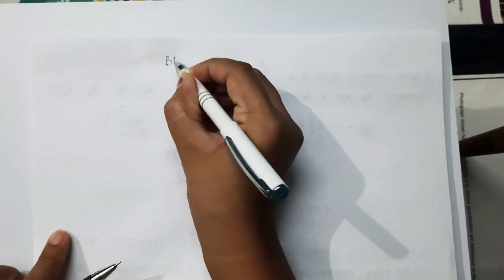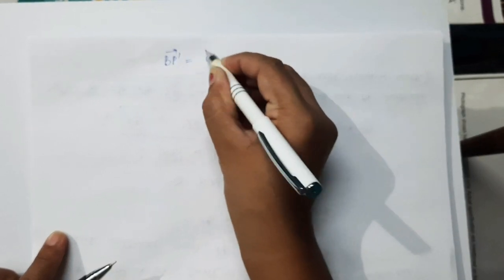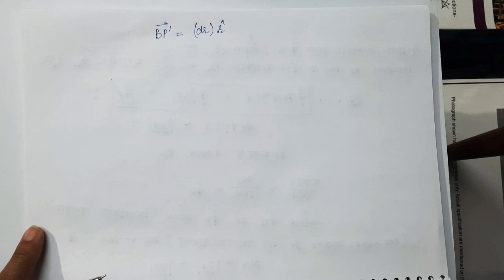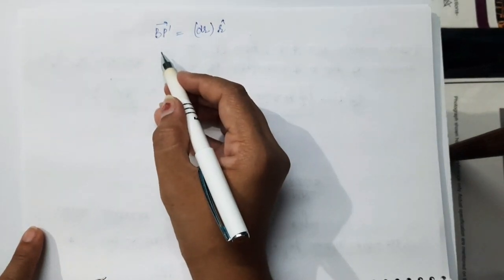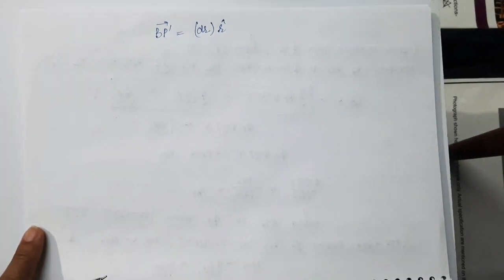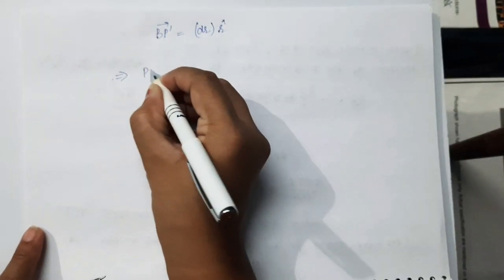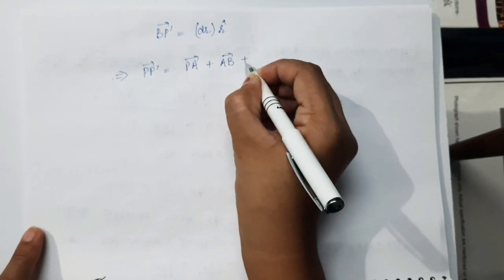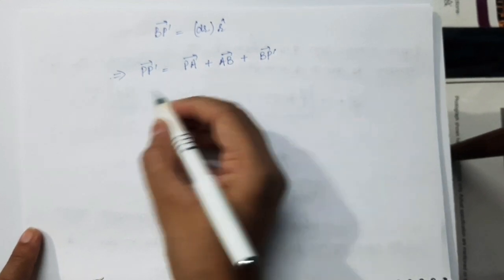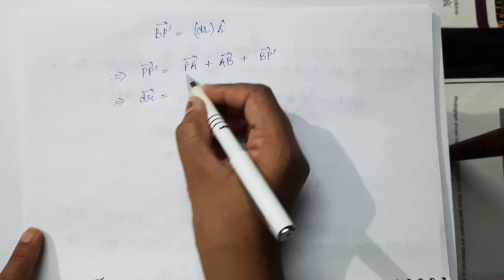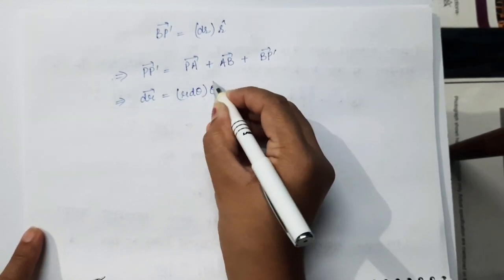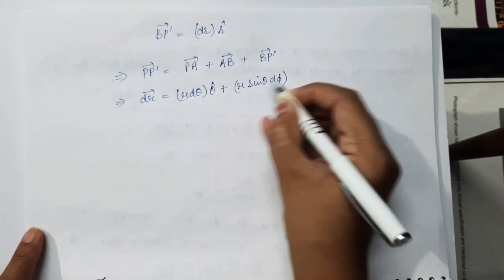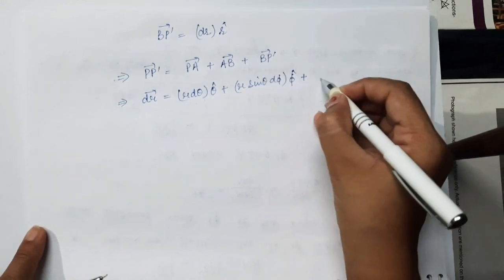So we have this BP' vector equal to its magnitude DR into R cap. Now put the values of all three vectors — that is PA vector, AB vector, and BP' vector — in equation A. We will get: BP' vector equals PA vector plus AB vector plus BP' vector. Substituting all values, DR vector equals RDθ into θ cap plus R sinθ Dφ into φ cap plus DR R cap.